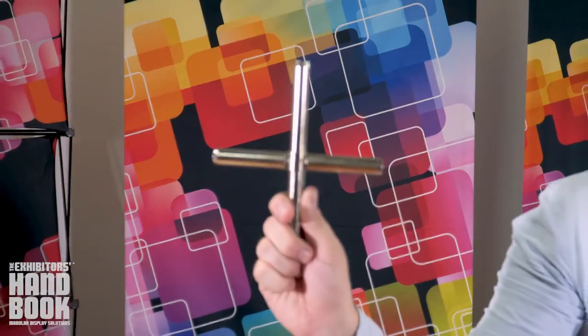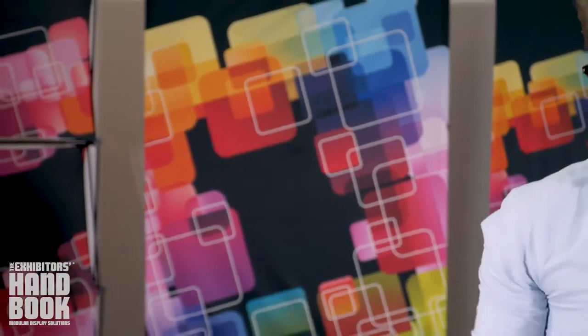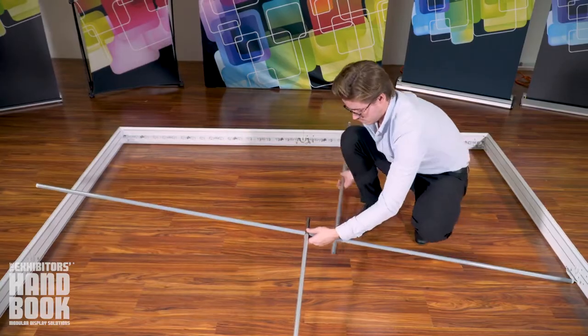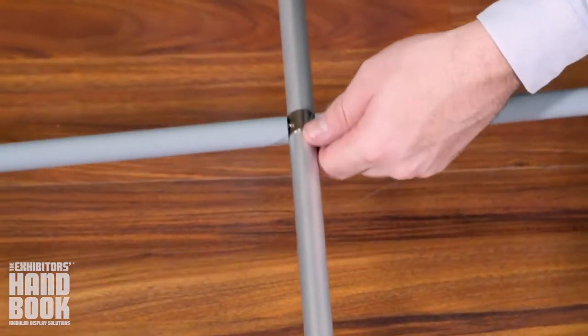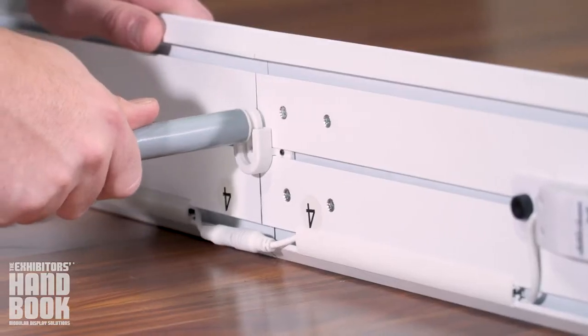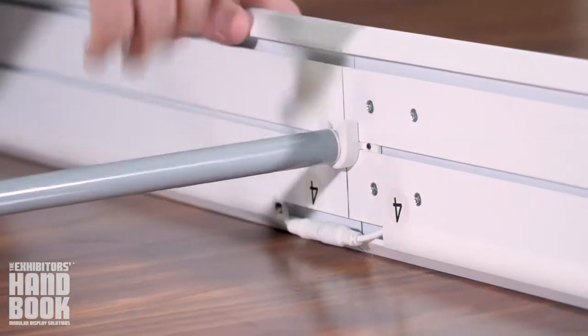Then grab the metal crossbar and attach each of the four metal support bars to each end. Once secure, slide each end of this crossbar frame into its respective U-shaped hook.